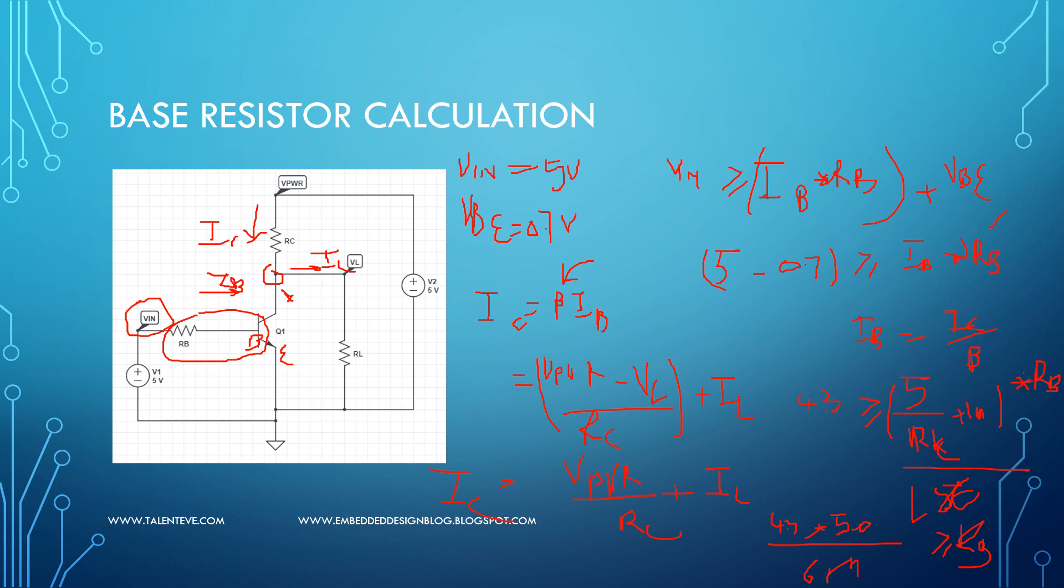So now designers these days generally tend to follow the previous circuits or reuse the circuits, and they don't calculate RC and RB, because these are most of the scenarios where you use for voltage conversion or powering on an LED. So it is better you follow these calculations and calculate the RB and RC in your design. Thanks for watching, please comment if you have any suggestions, questions or improvements on this video. Thank you.